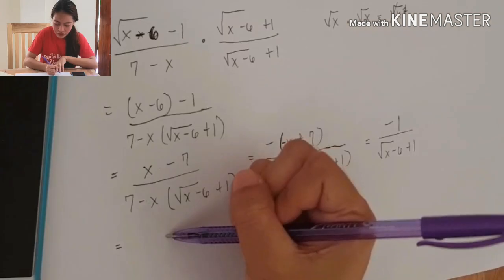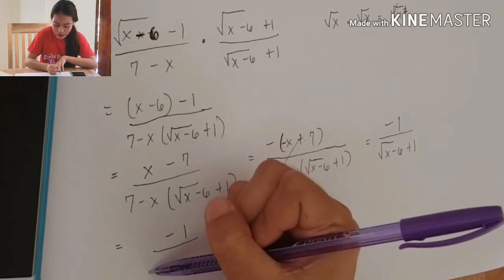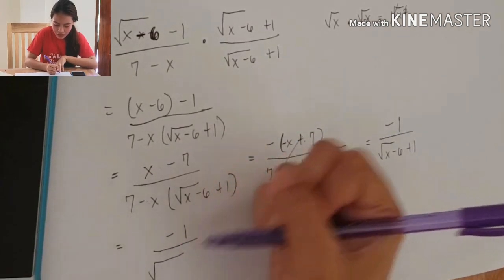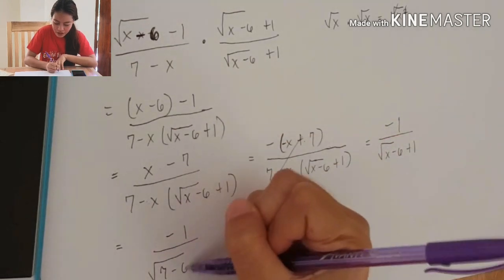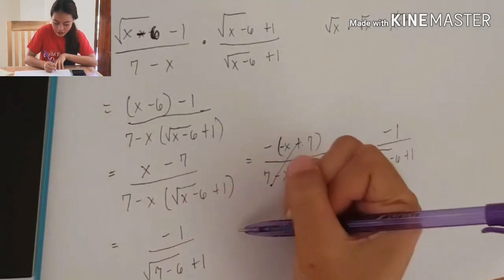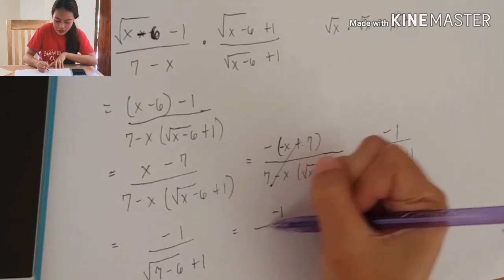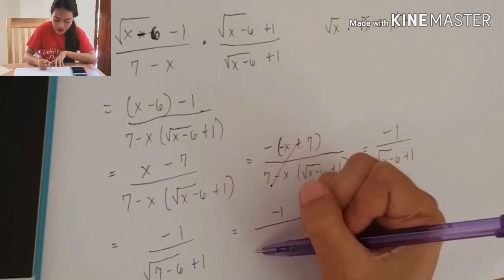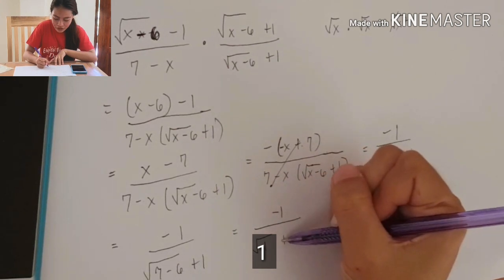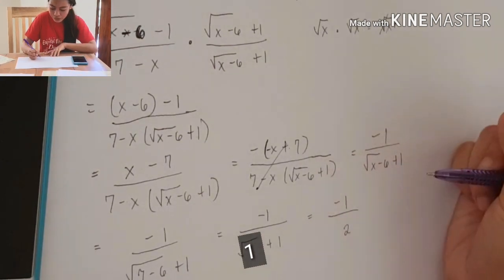Substituting x = 7: −1 over (√(7 − 6) + 1) = −1 over (1 + 1) = −1 over 2.